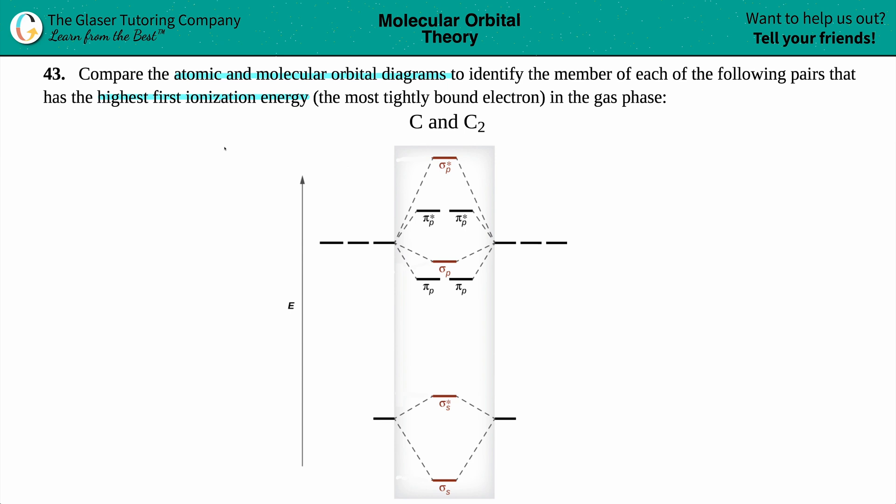Now here I already laid out the framework for the atomic orbitals and the molecular orbitals for C and C2. Just know that all of the orbitals that flank the sides of this, those are your atomic orbitals. I have my atomic orbital on the left and my atomic orbital on the right. And right in the middle with all of this is the molecular orbital.